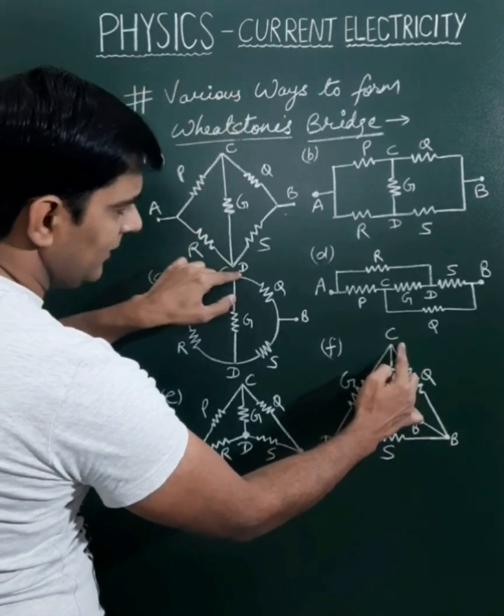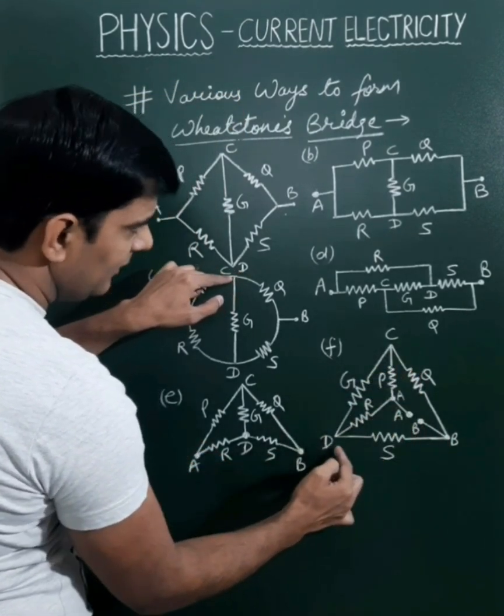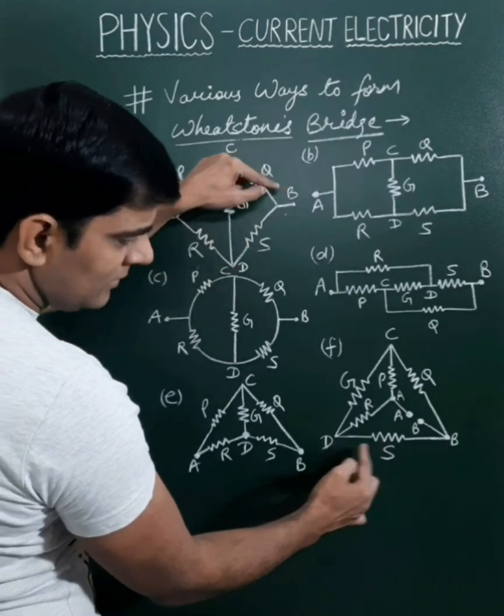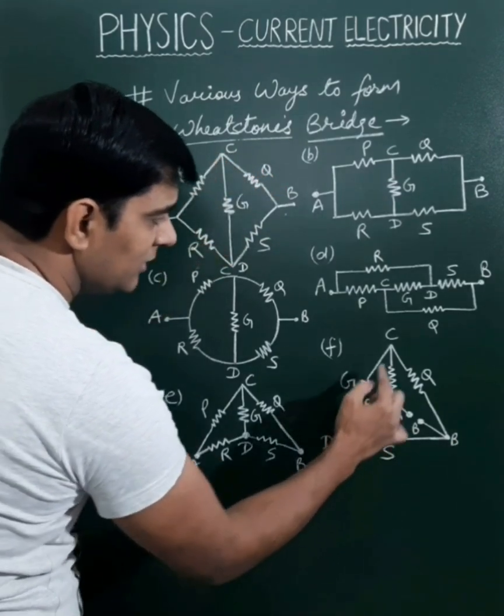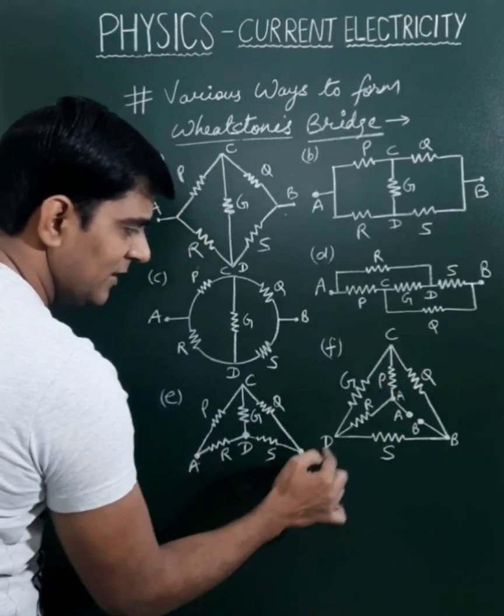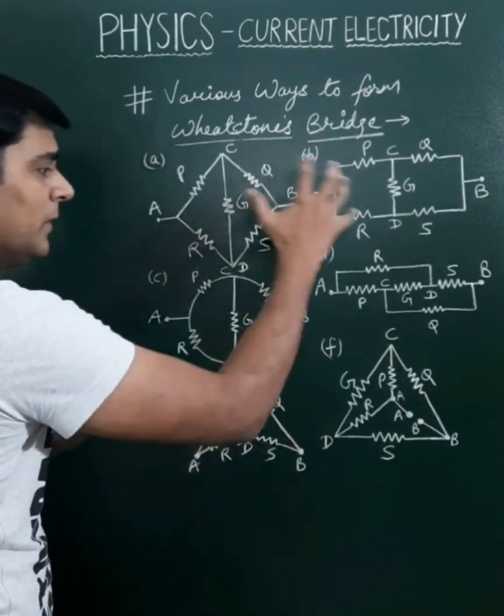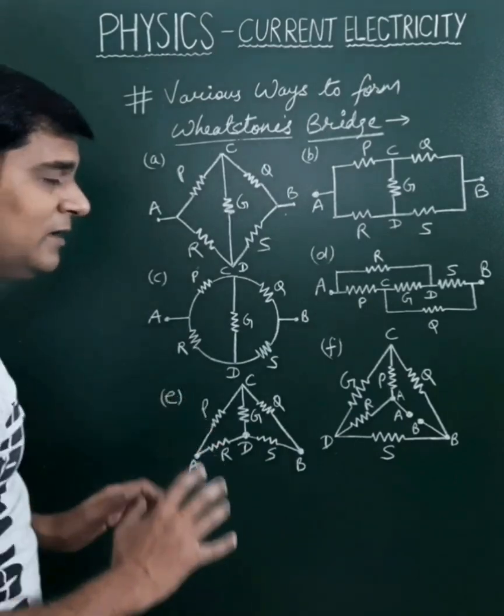R is between A and D. S is between B and D. And the G resistance is connected between C and D. In this way we can compare all six cases and they are equal.